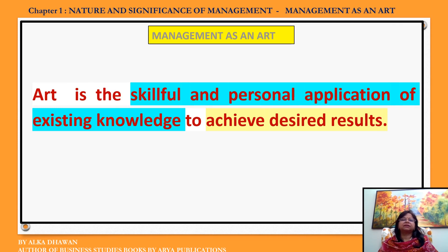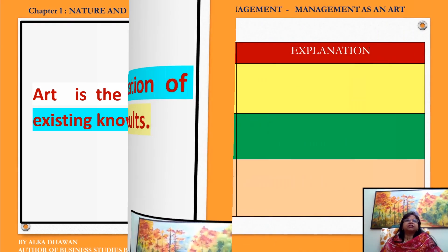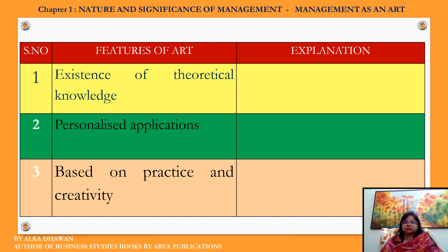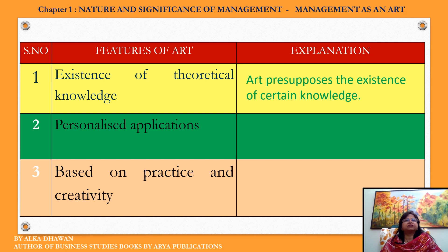Features of Management as Art. First, we need to understand the specific features of Art. The first feature is Existence of Theoretical Knowledge. Art presupposes the existence of certain knowledge. If you recall from the two forms of Art we discussed — music had a predetermined knowledge in the form of those seven notes, and painting had it in the form of the color wheel. So any form of Art will definitely have some predetermined, well-defined knowledge which serves as a base for anyone wanting to become proficient in that particular form of Art.